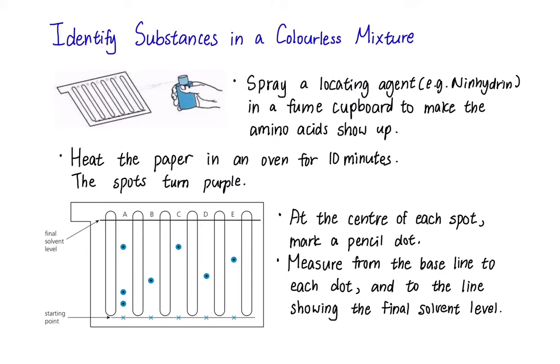Now is the time for magic. Spray a locating agent ninhydrin onto the chromatography paper. This will make the amino acids to show up. Do it in a fume cupboard as ninhydrin is harmful when inhaled or absorbed by your skin. When amino acids become completely visible, heat the paper in an oven for around 10 minutes. You will see that the spots have turned purple.